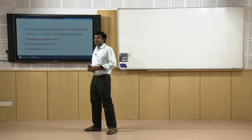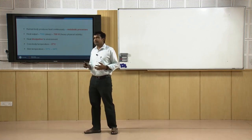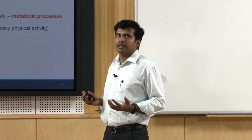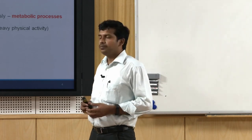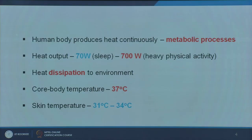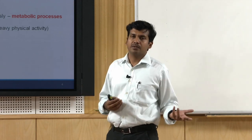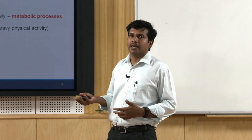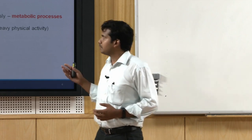The human body produces heat continuously — it is like a machine. We call it the metabolic process. As a part of this process, there is continuous heat generation, because of which heat emission and dissipation happens. The heat output varies somewhere between 70 watts during sleep and up to 700 watts during heavy physical activity. It depends primarily on what kind of activity you do — sitting in a class versus doing some physical activity or going for a jog — the amount of heat dissipation considerably varies.